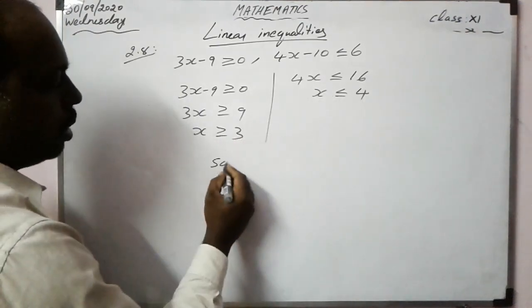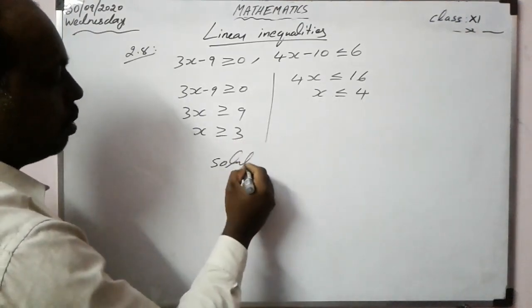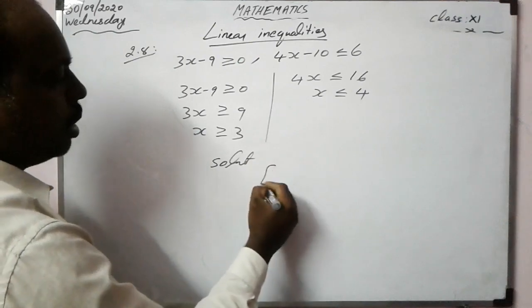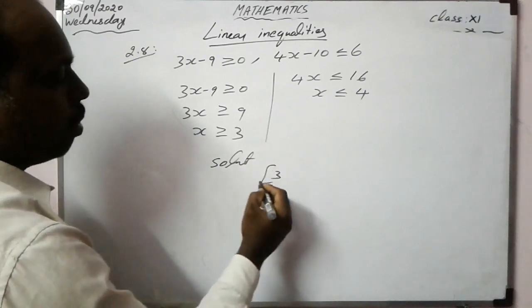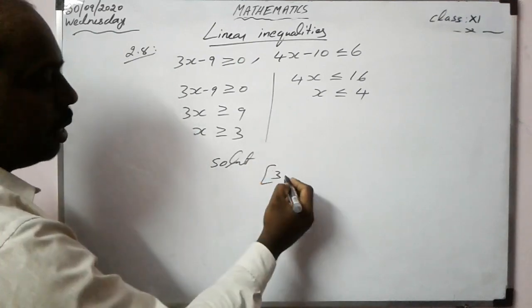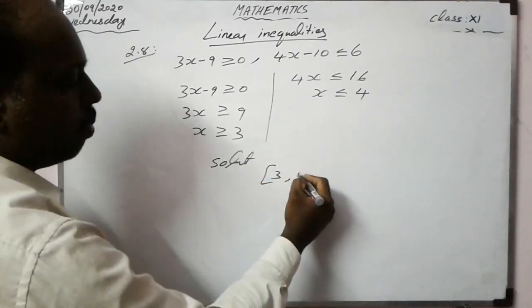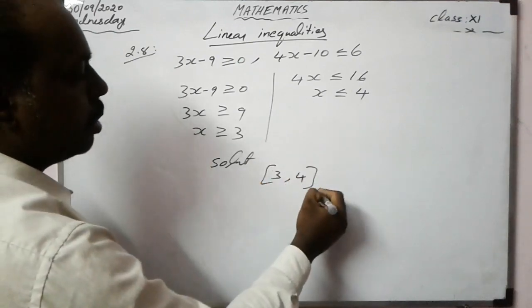So x must be greater than or equal to 3 but less than or equal to 4. The solution is the closed interval [3, 4].